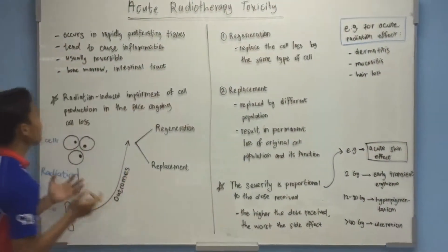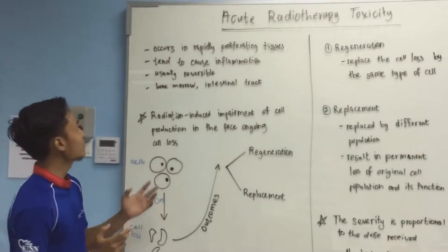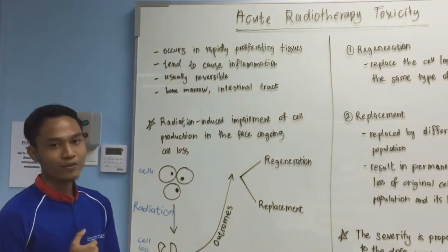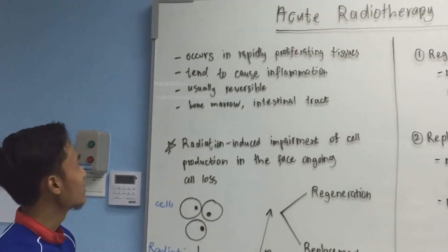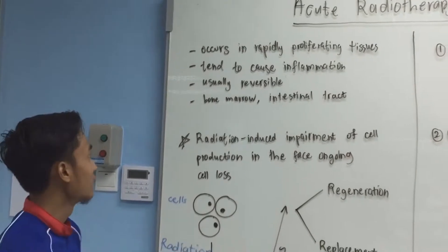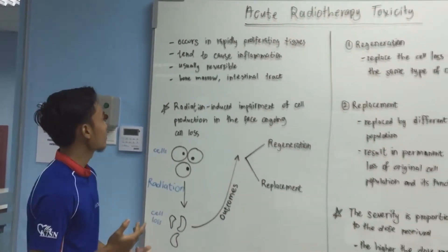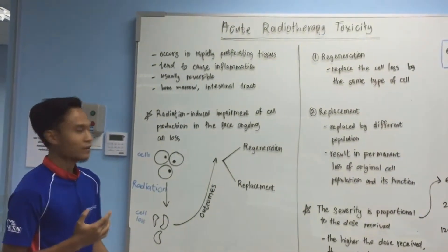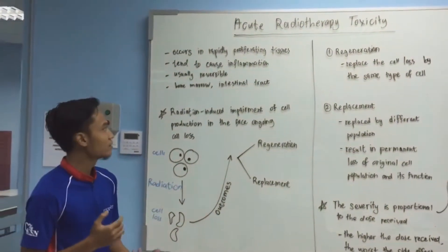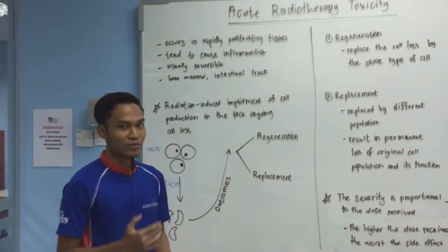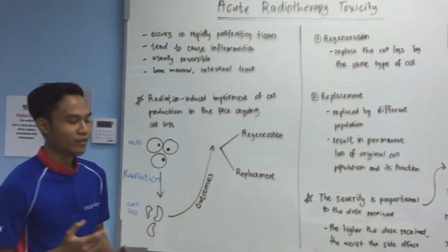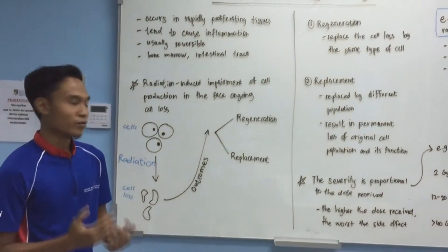Acute effect of radiotherapy occurs in rapidly proliferating tissue and tends to cause inflammation. It's usually reversible and occurs in bone marrow and intestinal tract. Compared to the late effect, it can be found in all organs.